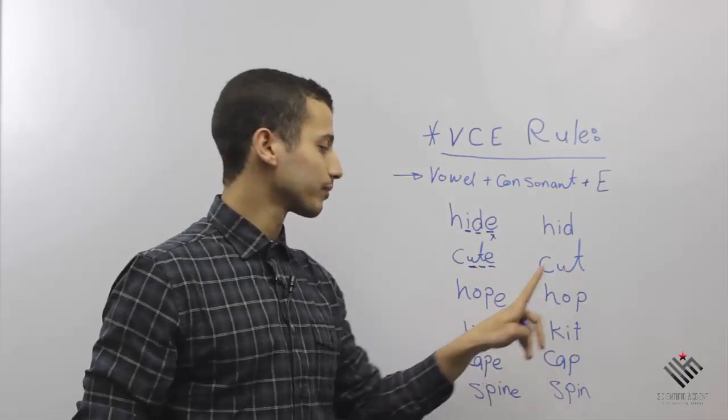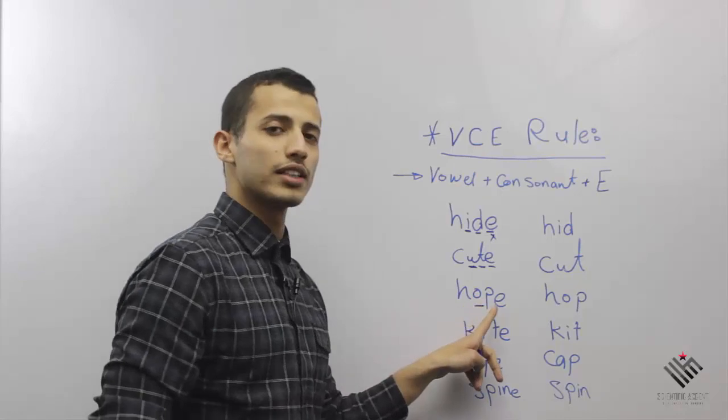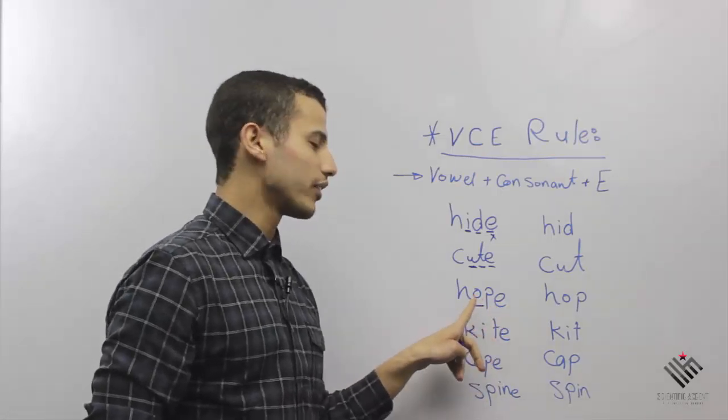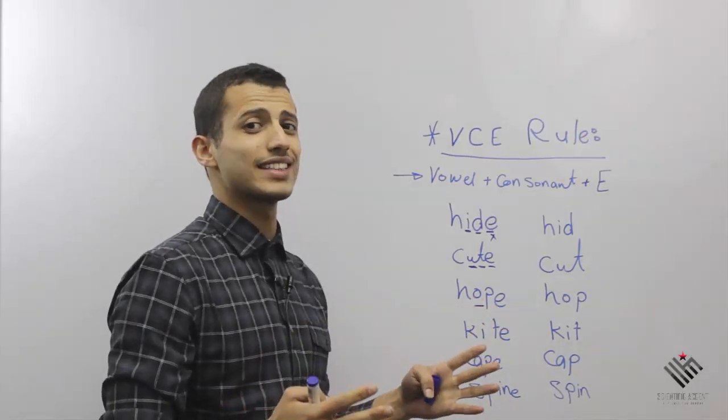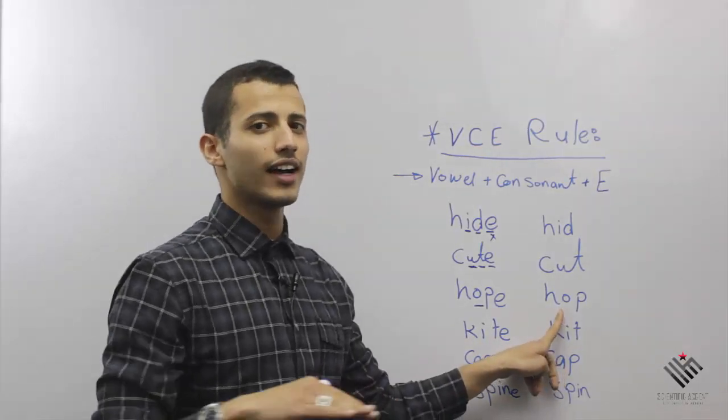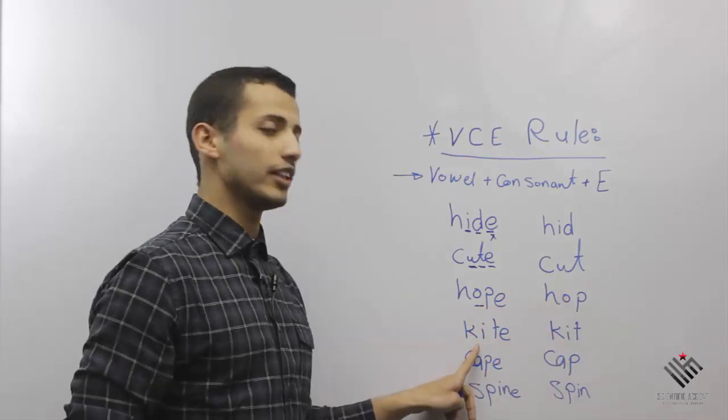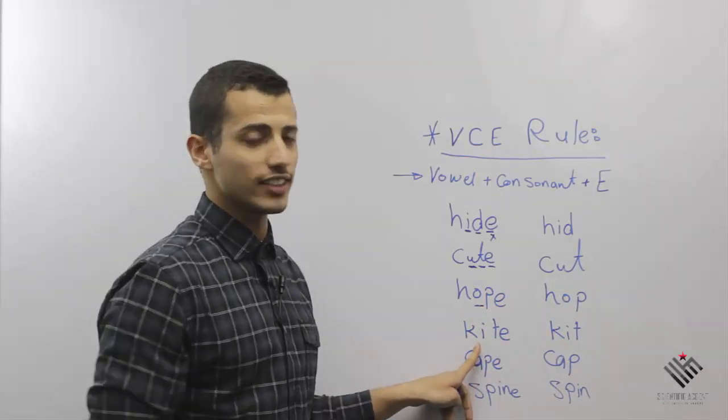So cute, cut. This one here, this is O, vowel plus consonant plus E. So this O is O, so I'm going to say 'hope.' Without the E here, it's going to be 'hop.' Hope, hop.